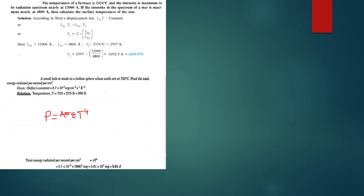The energy radiated — remember area of a sphere is 4πr² — times Stefan's constant, times emissivity, times T to the power 4. However, the question asks us to find the total energy radiated per second per centimeter squared.